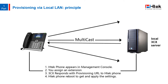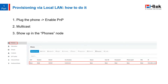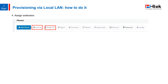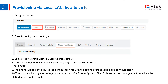Now let's see how to achieve this step by step. First, plug the phone into the network and enable the phone's PNP function. Second, the phone will send the multicast message across the LAN, which will be picked up by the 3CX phone system. Third, the phone will show up in the phones node in the 3CX management console as a new phone. Now assign it to an existing extension or create a new extension. You will then be taken to the extension's provision tab where you can specify other configuration settings. Through these steps, the phone will apply the settings and connect to the 3CX phone system, and the IP phone will be manageable from within the 3CX management console.